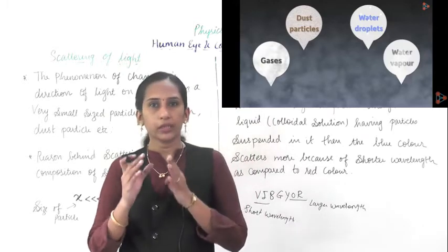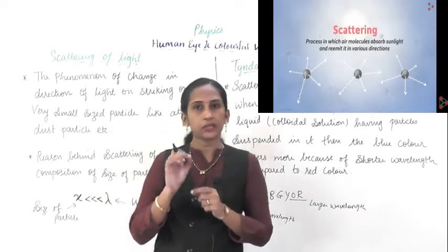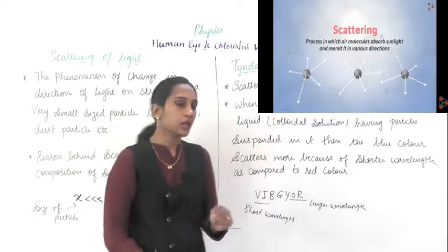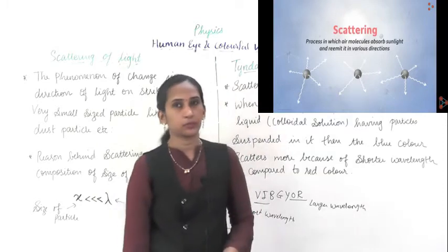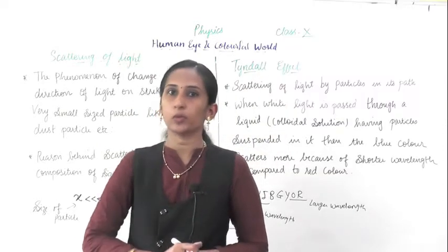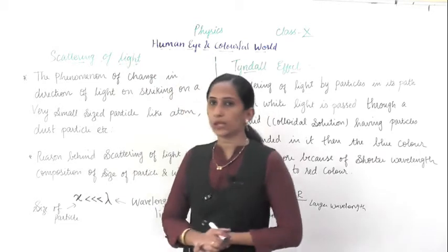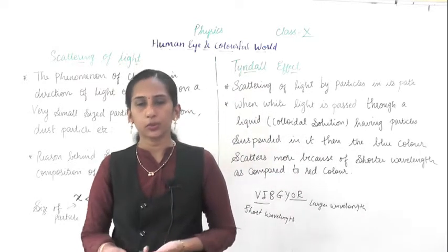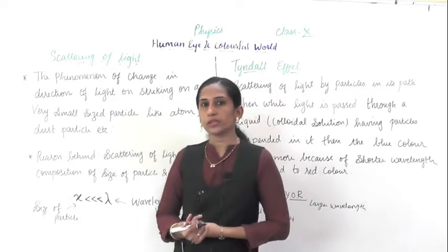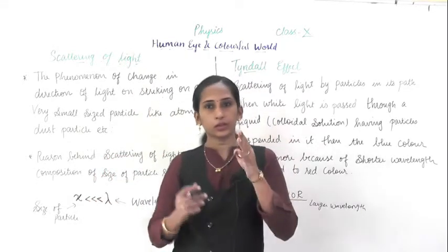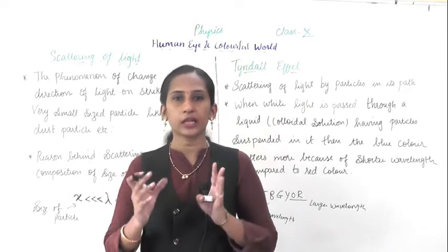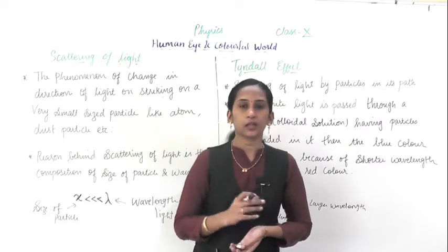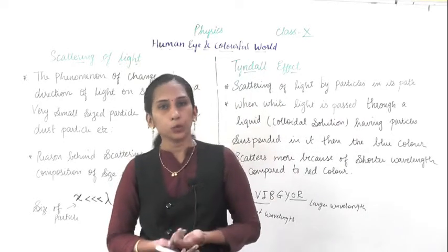As it is white light, when it scatters or when it hits a tiny particle, scattering occurs. Which light scatters the most when it strikes? It is the blue color light — blue color light scatters the most. That's why you can see the sky is blue. Because when the sunlight falls on the Earth, it strikes small small particles which scatter the light, and this scattering causes the blue color light to scatter.